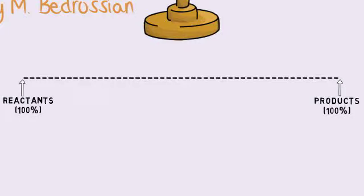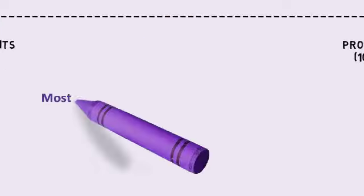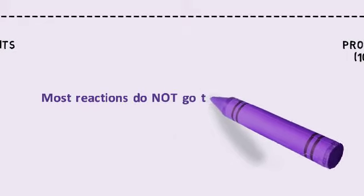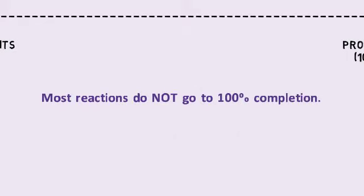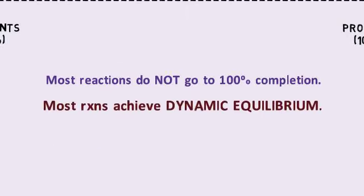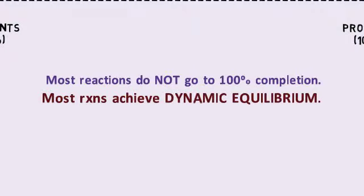In reality, however, this does not quite occur. Most reactions do not go to 100% completion, meaning that there are still reactants present in the container, along with products. This is called dynamic equilibrium.